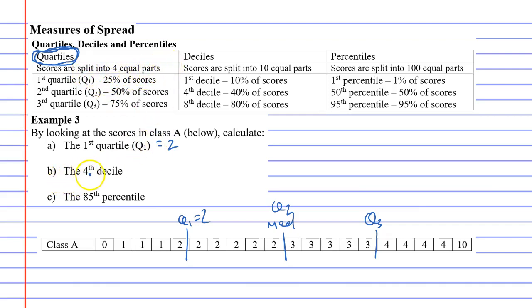So question B wants you to find the fourth decile and deciles are when scores are split into ten equal parts. So I'm going to get rid of this because I want to not look at quartiles now. I want to look at deciles.